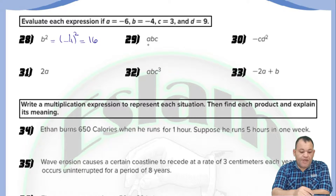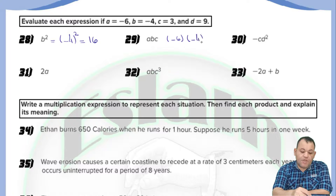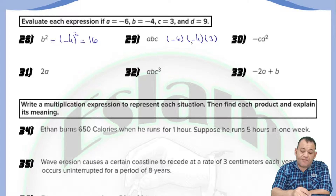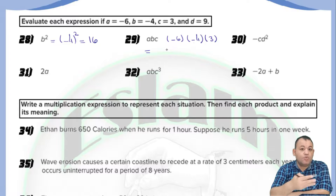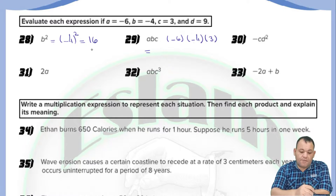For question number 29, we have a times b times c. Substituting: a equals negative 6, b equals negative 4, and c equals 3. Negative times negative is positive, then times positive is positive. The negative sign appears 2 times, which is even, so the answer is positive. Now multiply: 3 times 4 equals 12, times 6 equals 72.